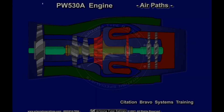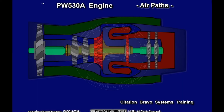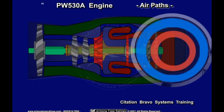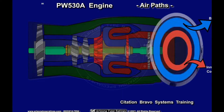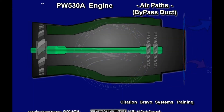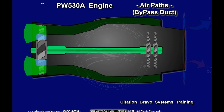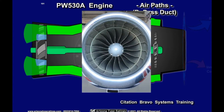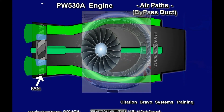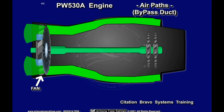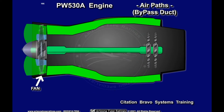There are several paths in the engine to route the various air flows. The primary air paths are annular, or ring-like in nature. The bypass section directs the cool air accelerated by the outer portion of the front fan. The bypass duct surrounds the outer portion of the engine's casing.